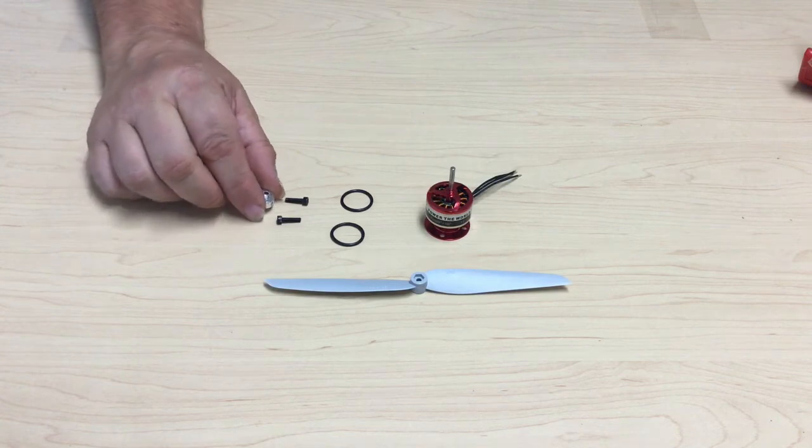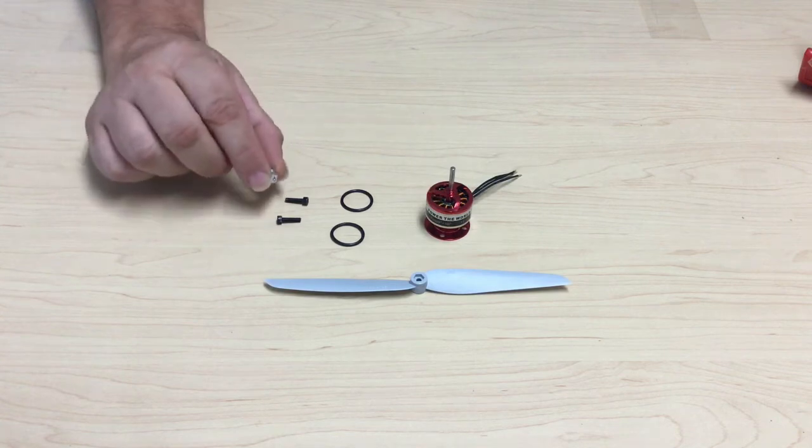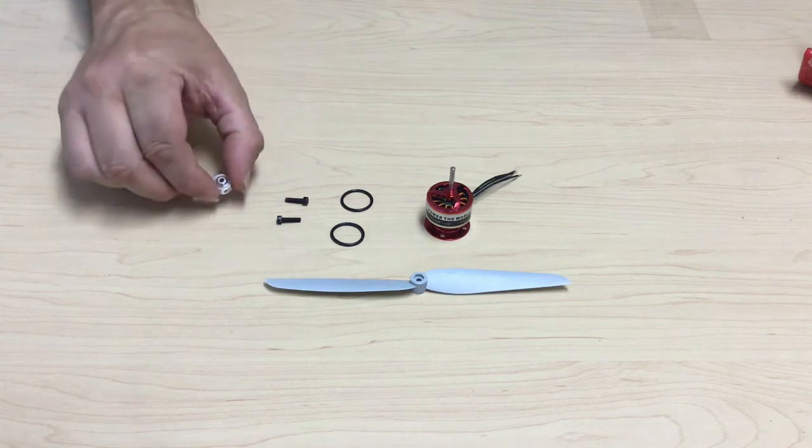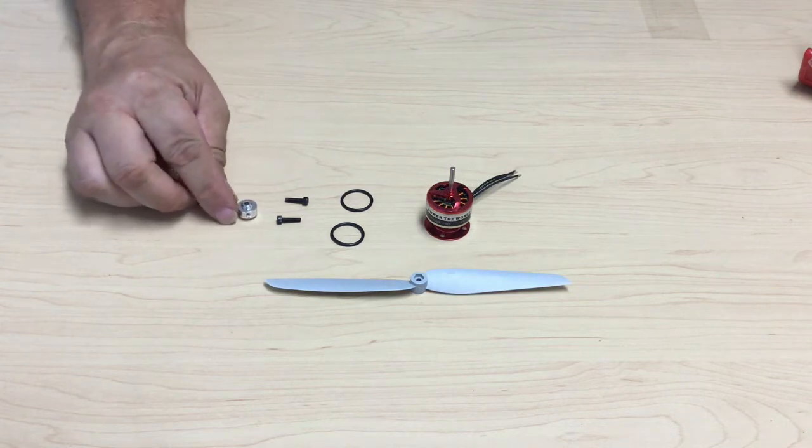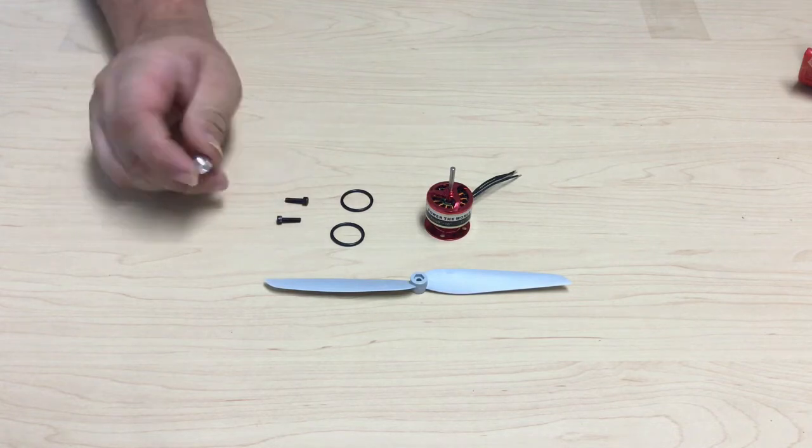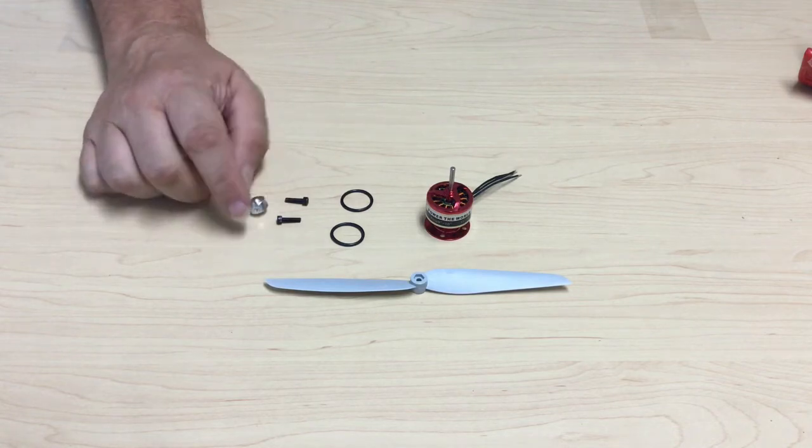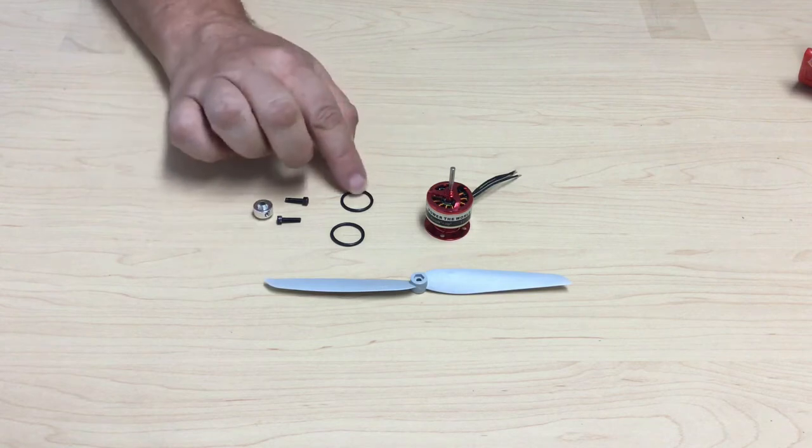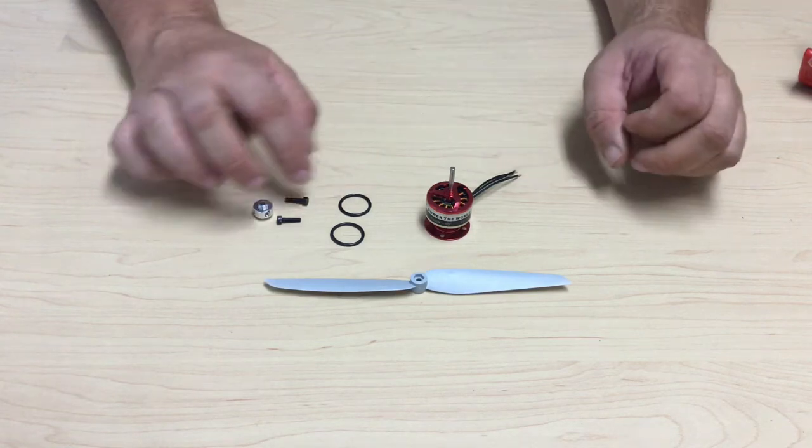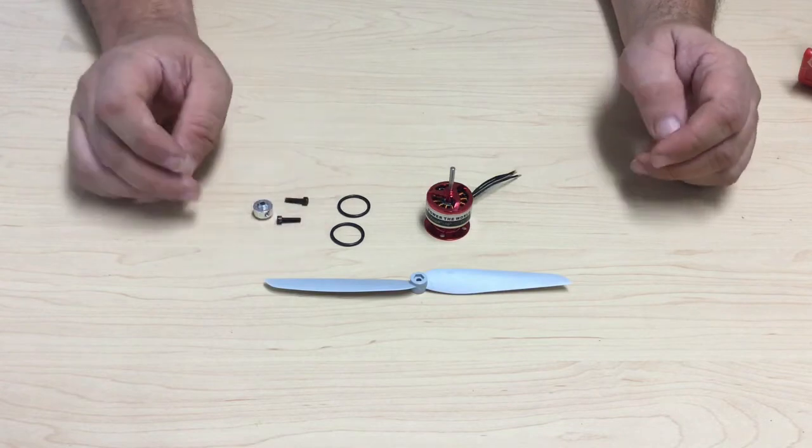The prop saver itself consists of a round piece of metal with a hole in the center, two screws which go in either side of the prop saver, and O-rings, usually one or two to hold the prop on. One to hold the prop on and one spare.